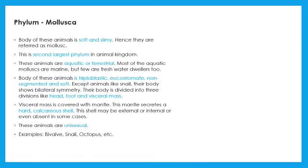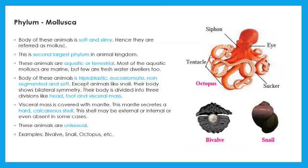The next phylum is Mollusca — it is the second largest phylum. The body of these animals is multicellular, triploblastic, eucoelomate, non-segmented, and soft. It shows bilateral symmetry. The body is divided into three parts: head, foot, and visceral mass, which is covered with a hard shell. Most are aquatic and unisexual. Examples include octopus and snail.